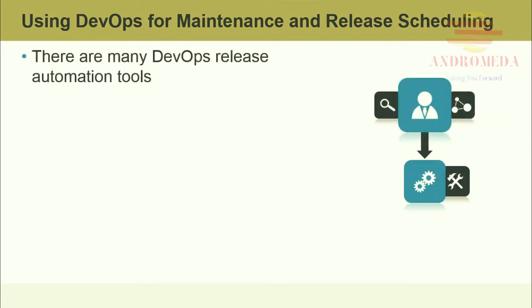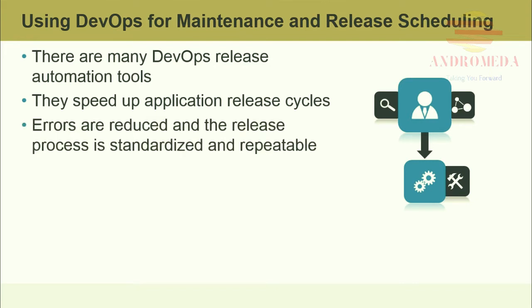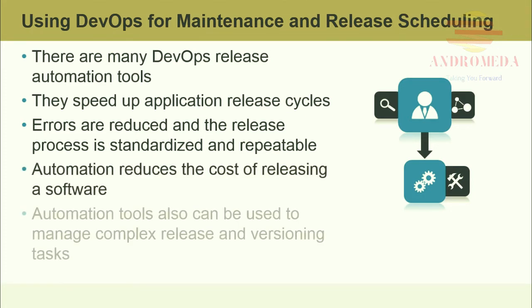There are many DevOps release automation tools — some are free, and some are vendor-specific tools customized for a language or a platform. They speed up the automation release cycle; applications can be built and deployed from a mouse click. Errors are reduced and the release process is standardized and repeatable. Automation reduces the cost of releasing software, and automation tools can be used to manage complex release and versioning tasks.